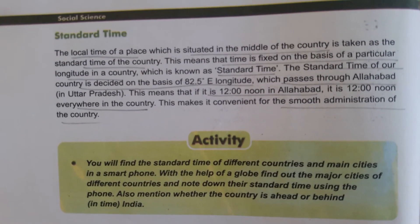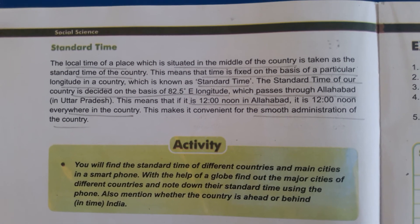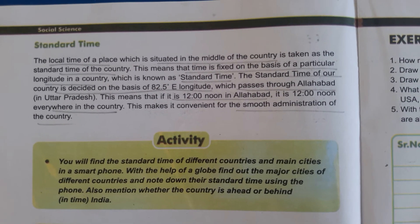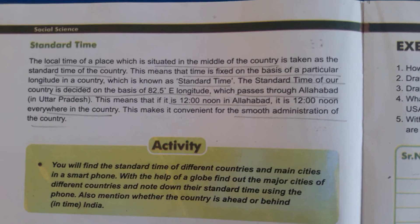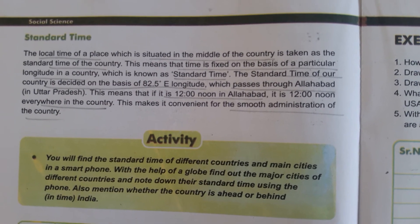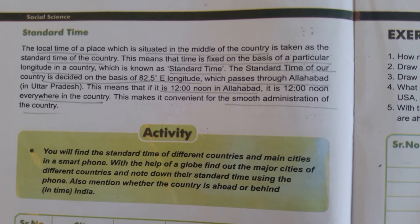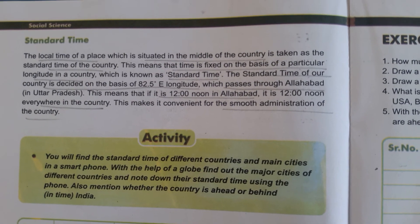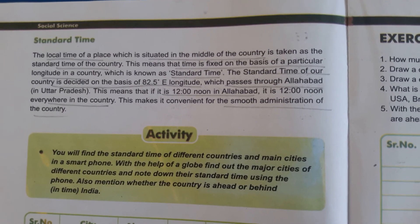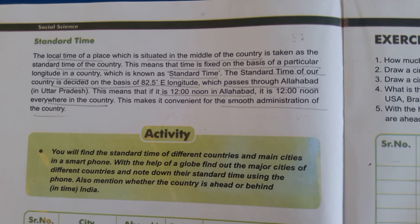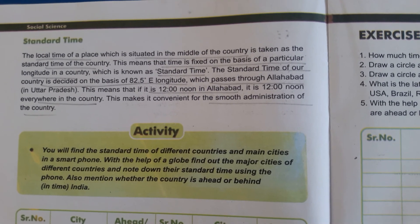The local time of a place situated in the middle of the country is taken as the standard time of that country. This means time is fixed on the basis of a particular longitude. For our country India, the standard time is based on 82.5 degrees east longitude, which passes through Allahabad in Uttar Pradesh. So when it is 12 noon in Allahabad, the entire country follows 12 noon.